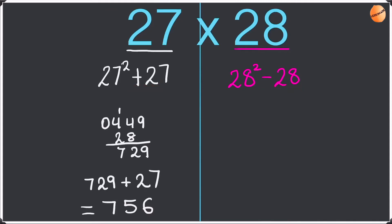Okay so 28 squared — go check that video out if you guys don't know how to do 28 squared quickly; the link is in the description below. So 28 squared is 784. Now we have to do 784 minus 28, which is going to be 756.